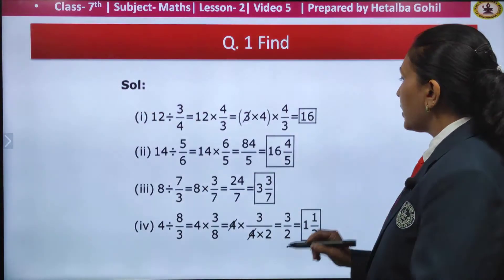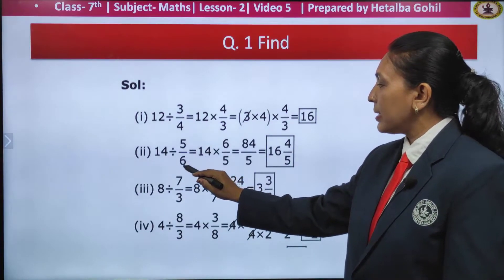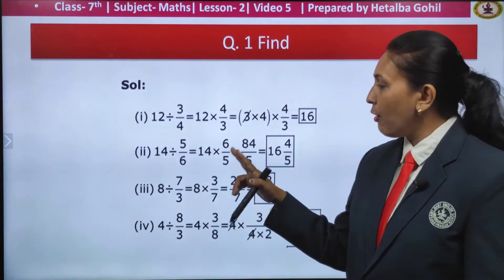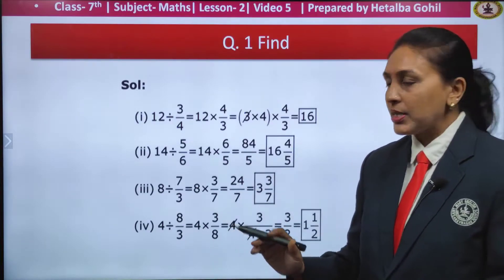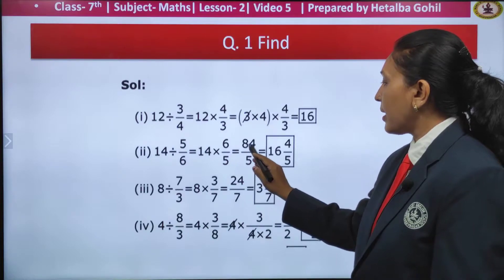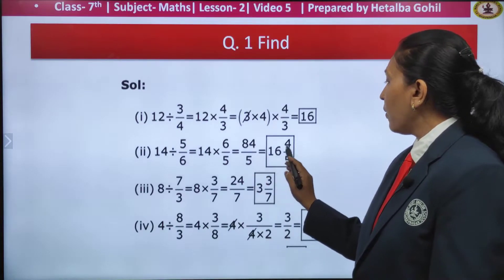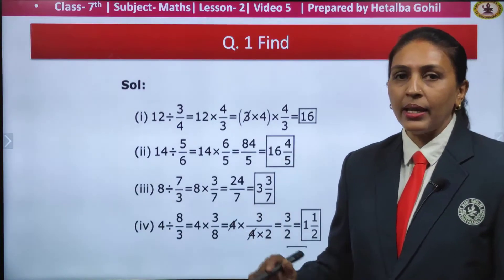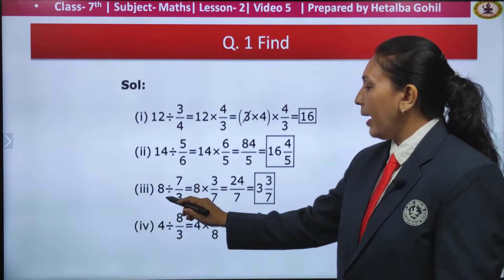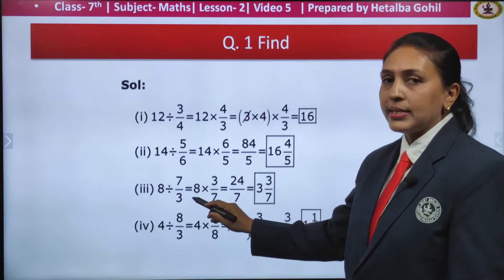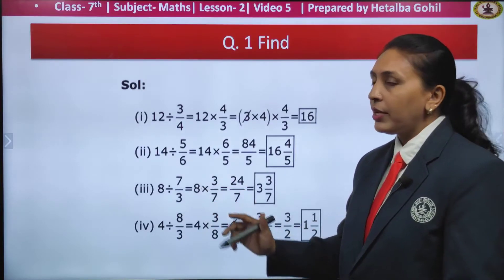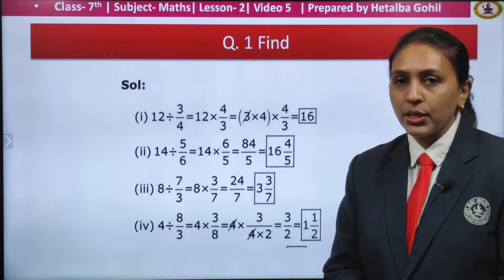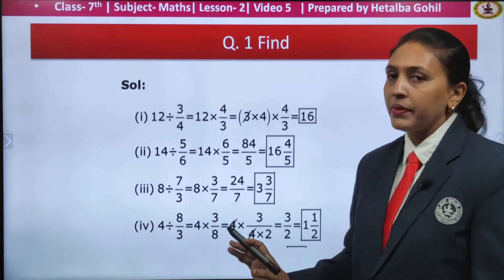Similarly, the next one: 14 divided by 5 by 6. The next step is 14 into 6 by 5, the reciprocal of 5 by 6. Multiply the numerators: 14 into 6, I get 84 upon 5. Changing into mixed fraction, I get 16 and 4 by 5 as my answer. Third one: 8 divided by 7 upon 3, the next step is 8 into 3 by 7. You get 24 by 7, and converting into mixed fraction you get 3 and 3 upon 7.